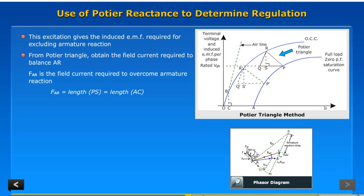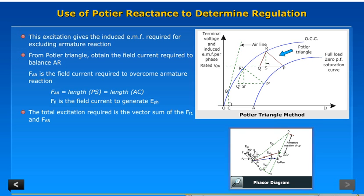Phasor equals length PS equals length AC. Phfl is the field current to generate EPH. The total excitation required is the vector sum of the FF1 and Phar.